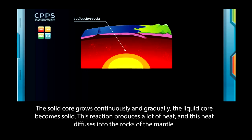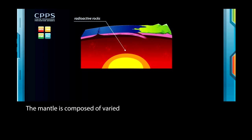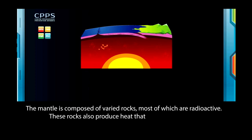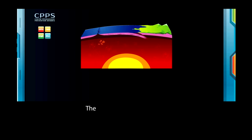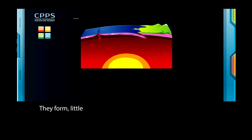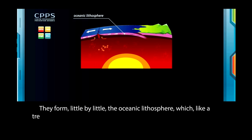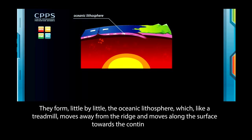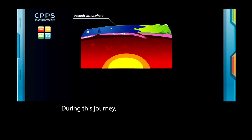The mantle is composed of varied rocks, most of which are radioactive. These rocks also produce heat that warms the mantle. The hot rocks are less dense. They will therefore rise towards the surface where the ridges are. They form, little by little, the oceanic lithosphere, which, like a treadmill, moves away from the ridge, and moves along the surface towards the continents. During this journey, the oceanic lithosphere cools down, thickens, and becomes denser.